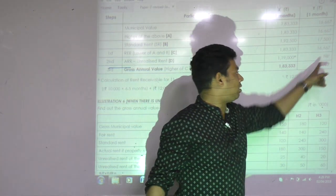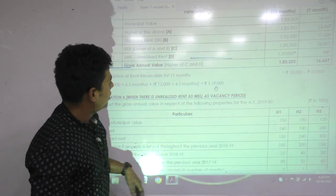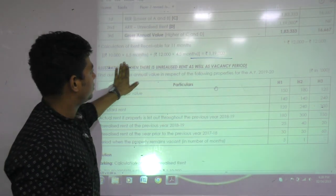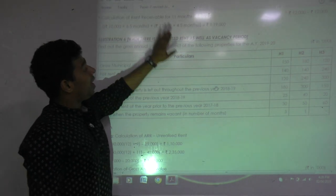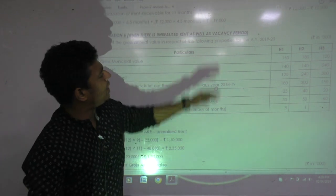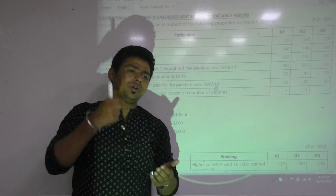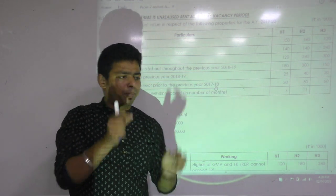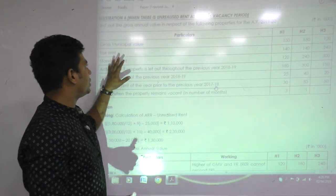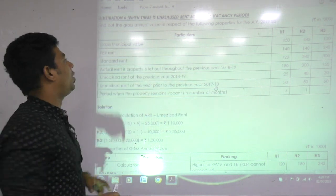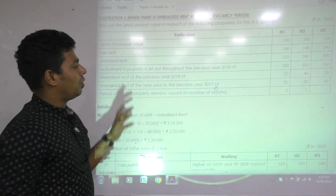Am I clear? How that became nil? 12,000 rent received minus unrealized rent. Receivable minus unrealized. Can you do that? Yes. Next, when there is unrealized rent as well as vacancy. Whenever there is unrealized rent you don't have to get confused. Simple. Your actual rent component will be subtracted from that.